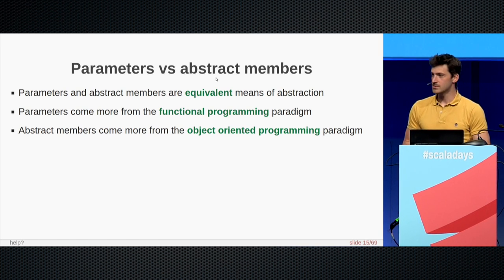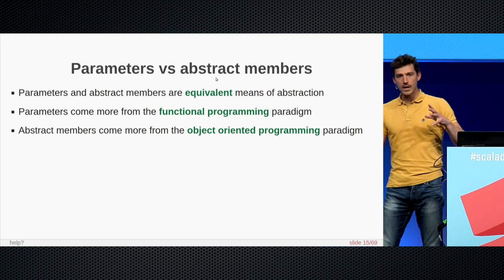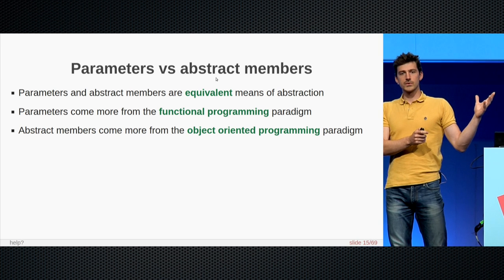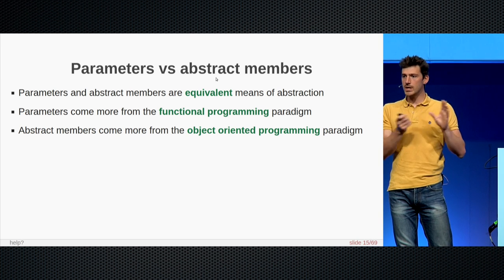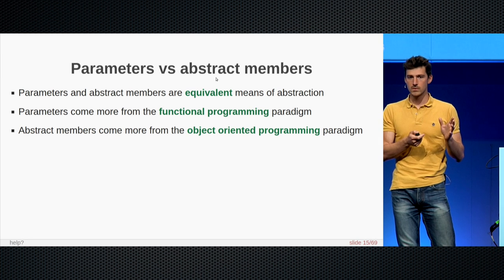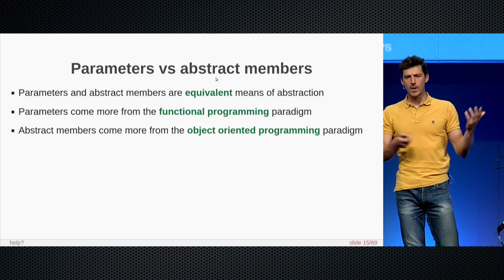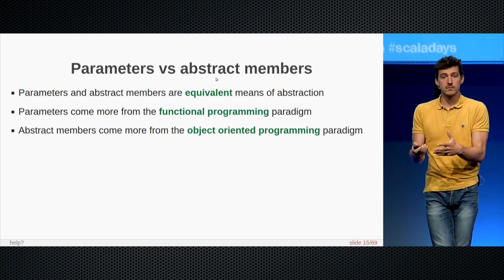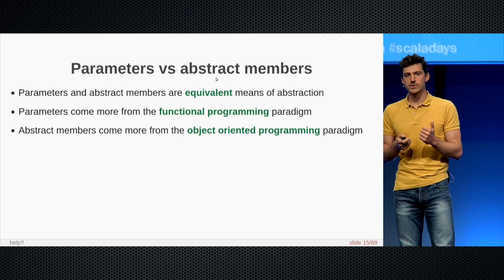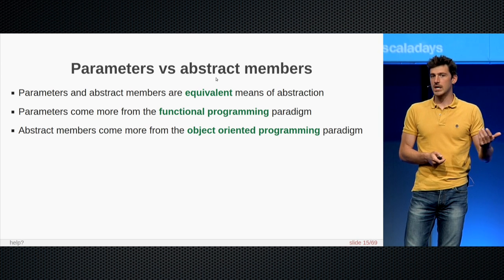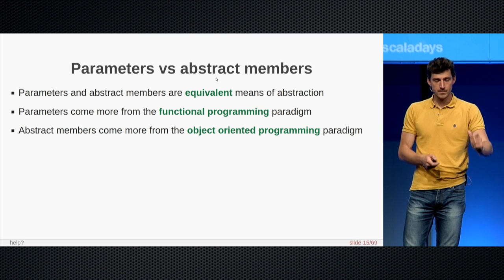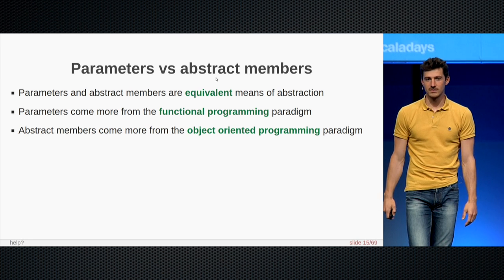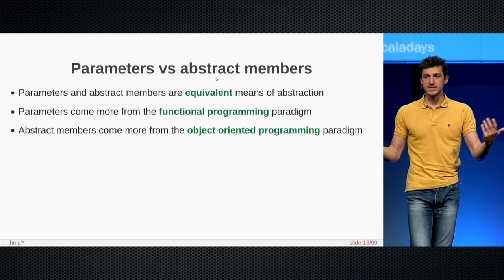Parameters and abstract methods are just two equivalent ways to abstract over values — we can always choose one or the other. Why do we have both in Scala? Parameters come more from the functional programming world, and abstract members come more from the object-oriented programming world because they rely on inheritance. Because Scala is a language that embraces both worlds, it's normal to have these two means of abstraction.